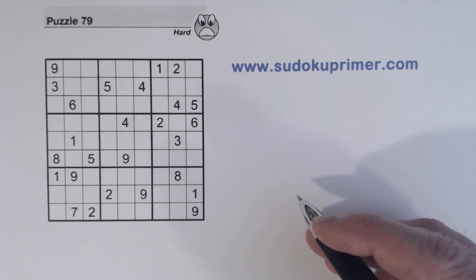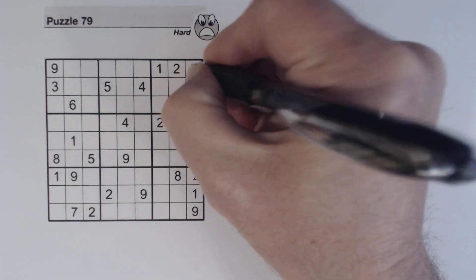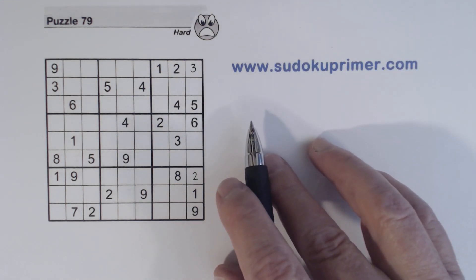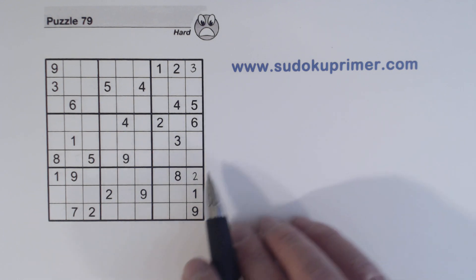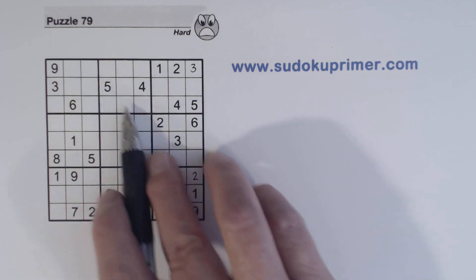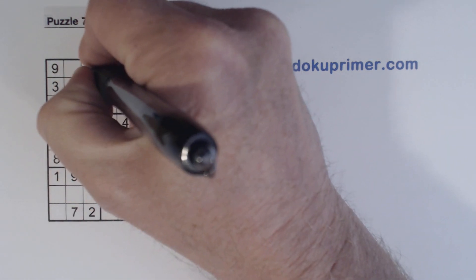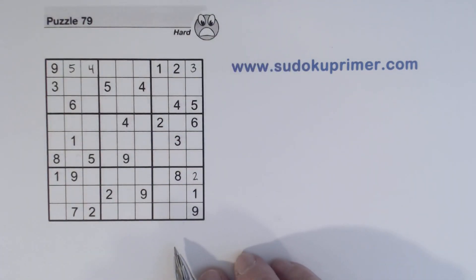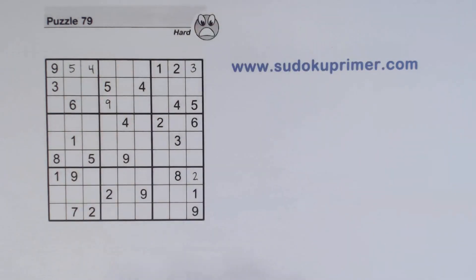First of all I'm going to plug in some easy numbers here. If you have any questions about anything I do on this puzzle or other puzzles, please leave a comment and I'll try and answer any questions you have. We have four-four-four and five-five-five — we have four or five twins there and we can solve those with that five. We have a nine.